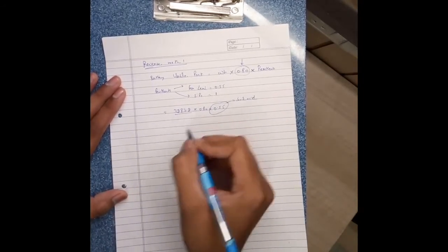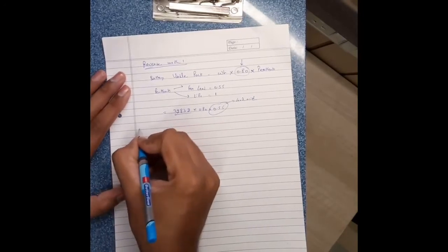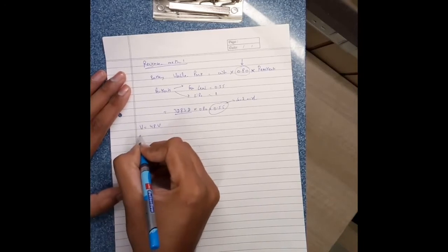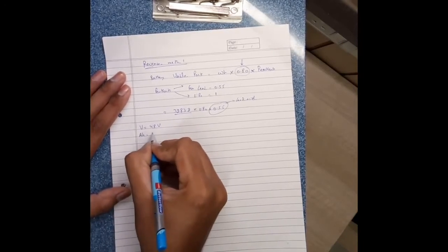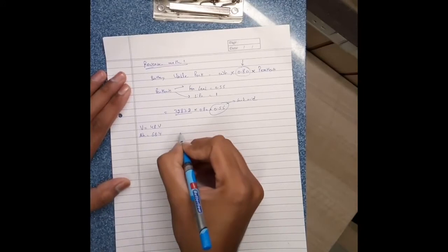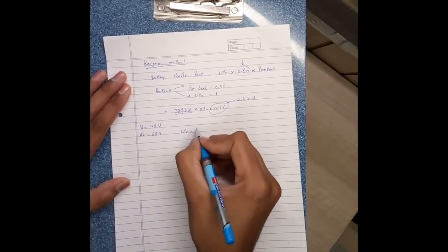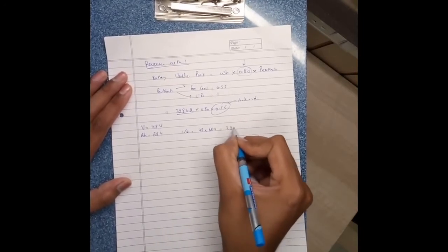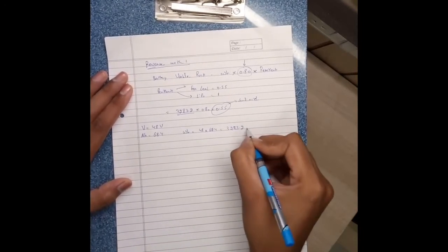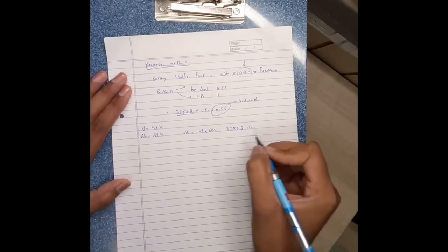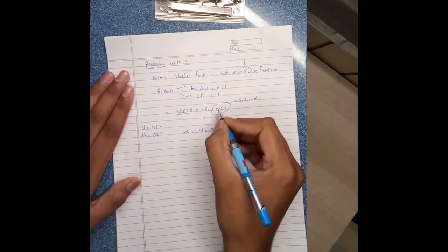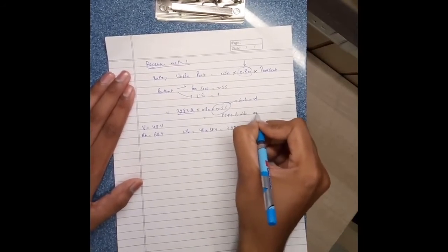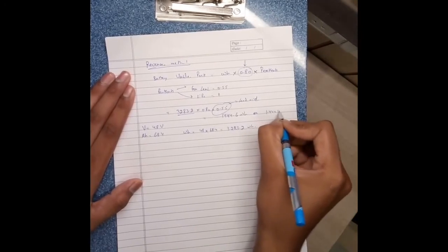How this 3282 watt-hour comes: voltage equals to 48 volts and ampere equals to 68.4, which equals 3282 watt-hour. To complete this, we get 1444.6 watt-hour or 1.444 kilowatt-hour.